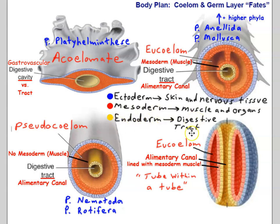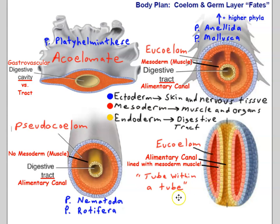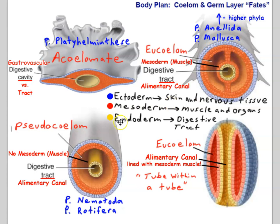In a eucoelomate we end up with a body plan that is a tube within a tube — the whole body is a tube and the alimentary canal or digestive tract is the tube running within the tube of the body, with two body cavities resulting from embryonic development. Annelida and Mollusca are the first phyla to have a true coelom and be eucoelomates, and all higher phyla following them are also eucoelomates — most notably us.